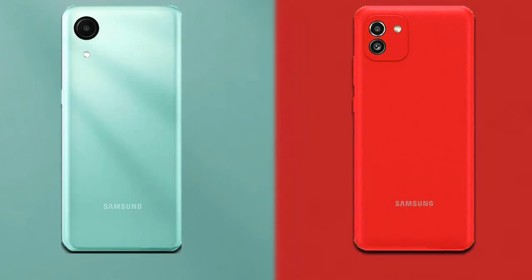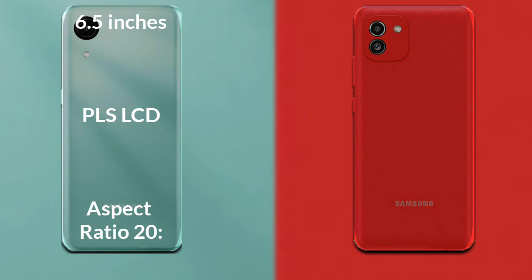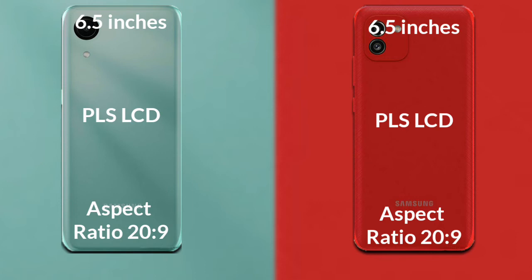I will compare the new Samsung Galaxy A4 Core with the Samsung Galaxy A3. Let's talk about the display. The Samsung Galaxy A4 Core has a 6.5-inch HD PLS LCD with an aspect ratio of 20:9. The Samsung Galaxy A3 also has a 6.5-inch HD PLS LCD with an aspect ratio of 20:9.